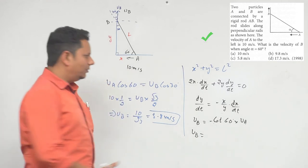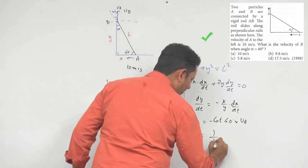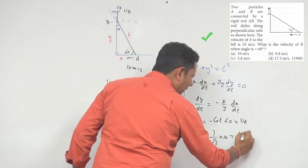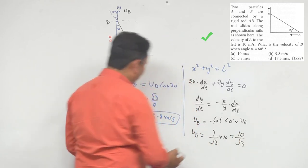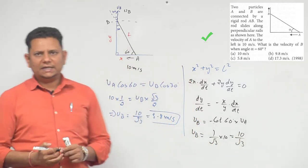The value equals 1 by root 3. Now, multiply by 10, the answer equals 10 by root 3. Again, solve it: 5.8 meters per second.